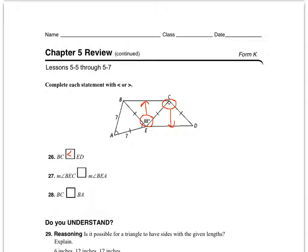For question 27, I'm comparing the measure of angle BEC — the 88-degree angle — with angle BEA. The side across from angle BEA is 7, but I don't have a side length across from angle BEC, so I need a different approach. I notice tick marks on BE and AE, meaning the angles across from them must be congruent. So angle A is congruent to angle ABE.